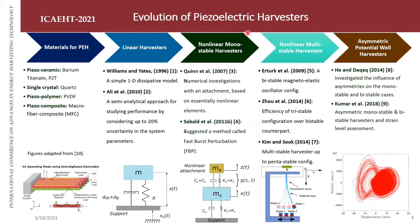The evolution of piezo-related harvesters began with materials broadly classified as piezo ceramics — including barium titanate and PZT — natural single crystals, piezo polymers such as PVDF, and piezo composites such as MFCs that we work with. Development started with linear harvesters, in which a simple 1D model is used and harvested power is measured using the power dissipated through damping.